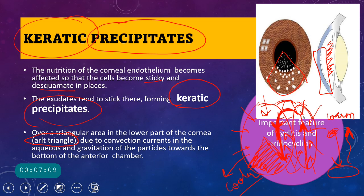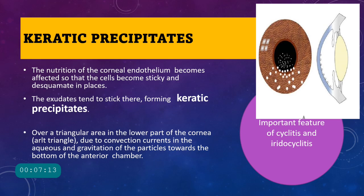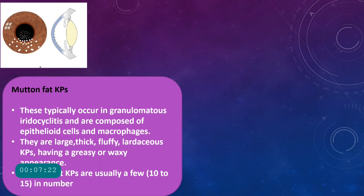Keratic precipitates are an important feature of cyclitis and iridocyclitis; in pure iritis you might not see them. The first type is mutton fat keratic precipitates, seen typically in granulomatous iridocyclitis, composed of epithelioid cells and macrophages. They are called mutton fat because of their greasy, lardaceous, waxy appearance. They are quite large, thick and fluffy, and are few in number — about 10 to 15 — seen in granulomatous iridocyclitis.